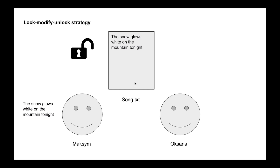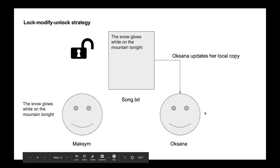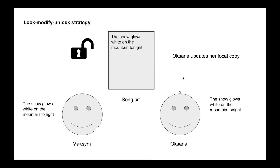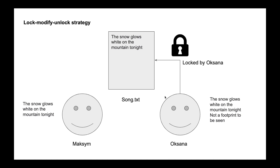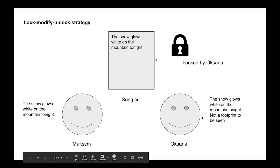Now Oxana can start work. First, she has to update her local copy — this operation is called update or pull. She pulls the latest version of the code, compares it with her own, and updates if possible. After getting data from the server, she locks the file and starts adding new lines to her local version.